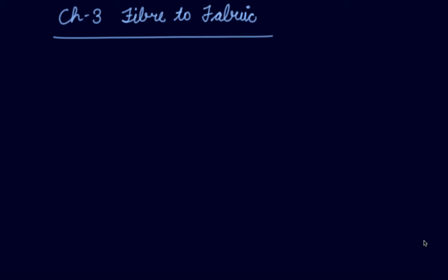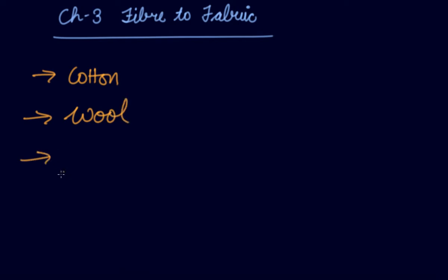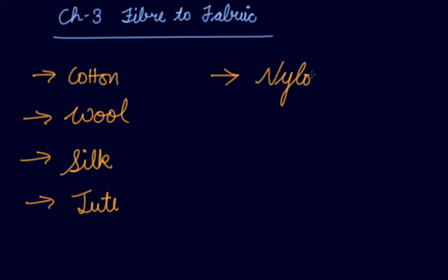In your 6th standard, you have already studied Fiber to Fabric, which covered the different types of clothes available, such as cotton, wool, silk, jute, and some chemically processed cloth materials like nylon and polyester. You learned how these are obtained and what the processes are.